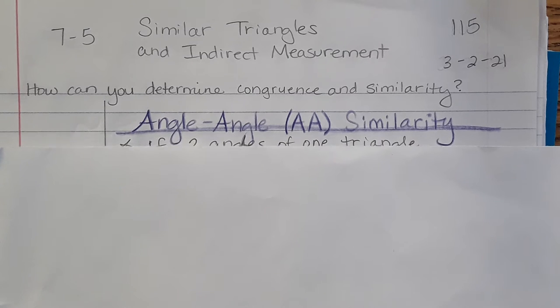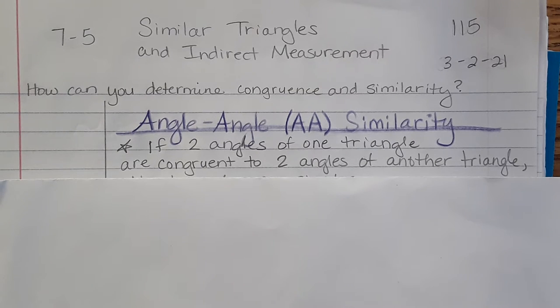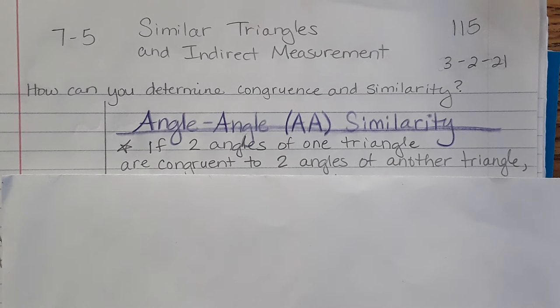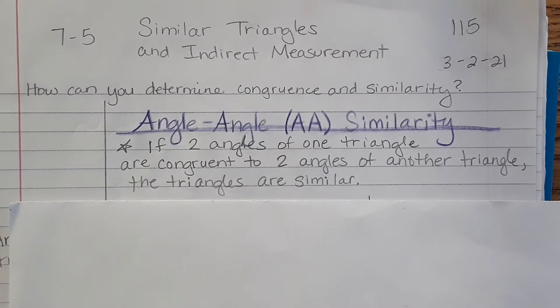What this states is that if two angles of one triangle are congruent, the same, as two angles of another triangle, the triangles have to be similar.